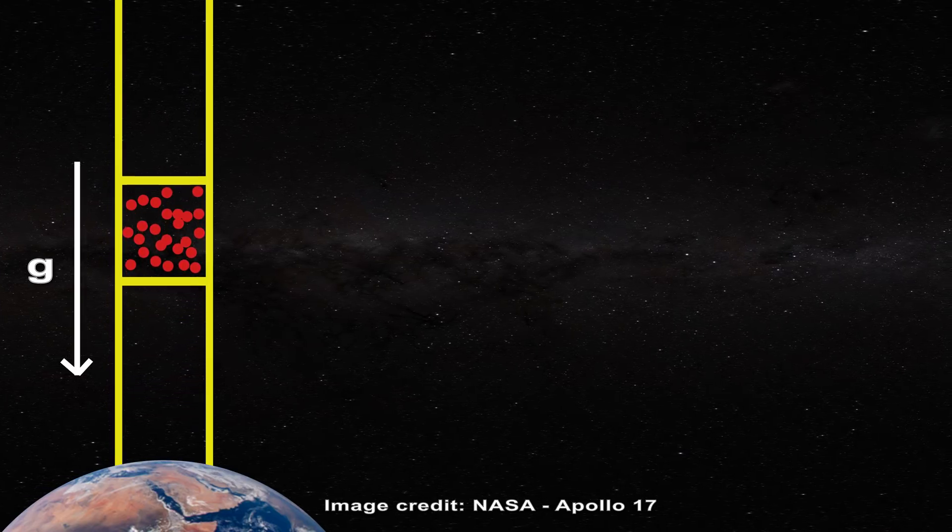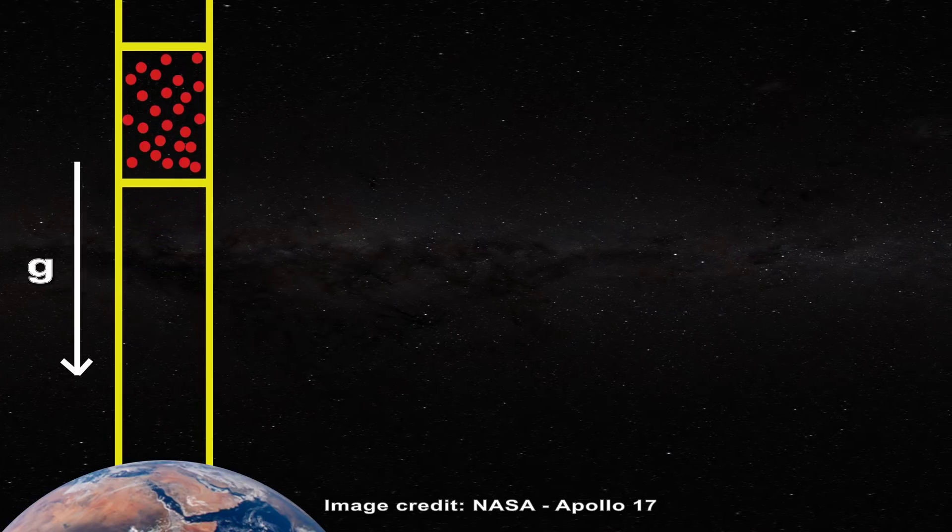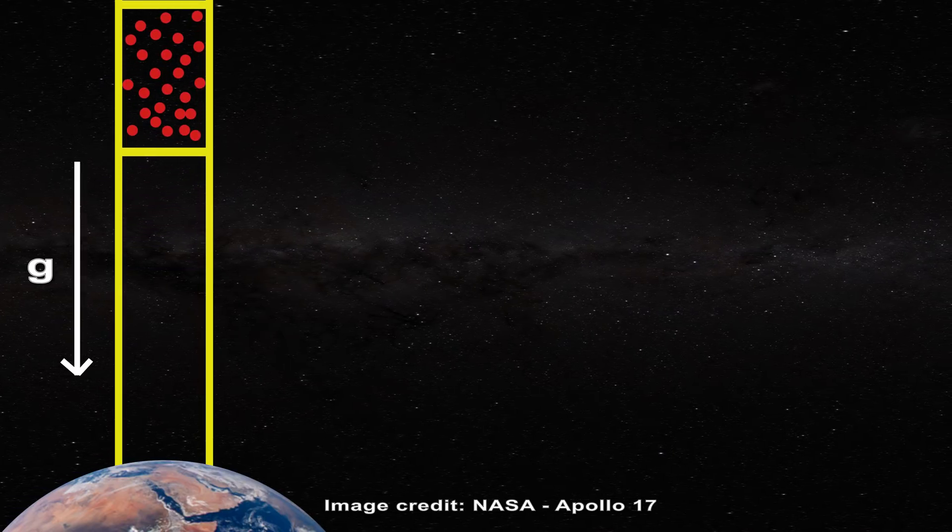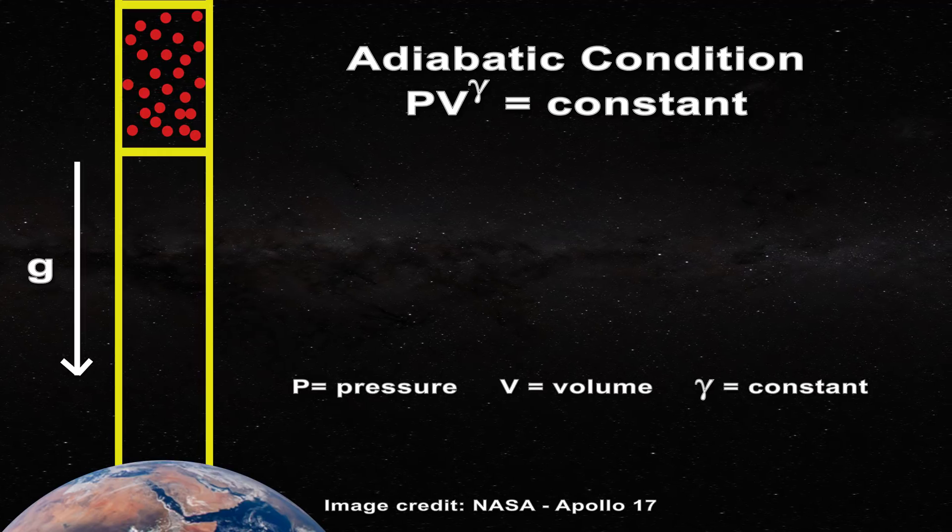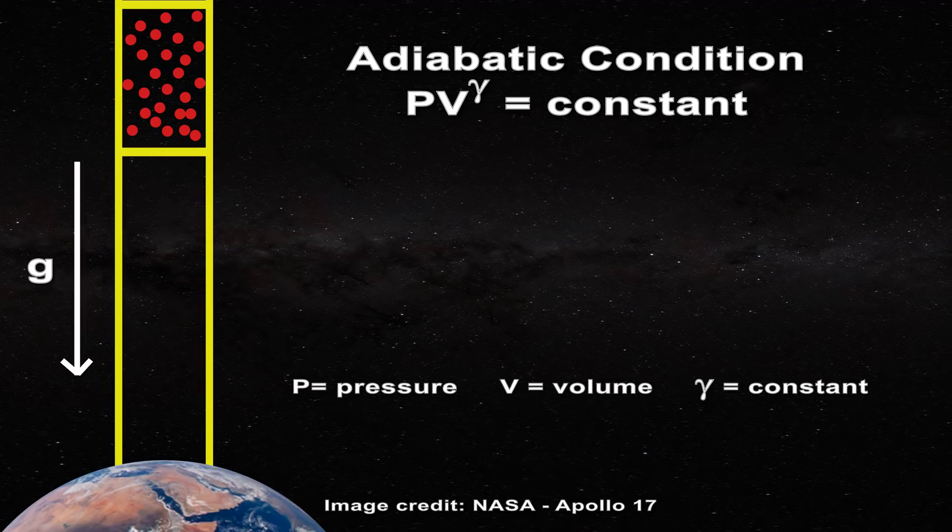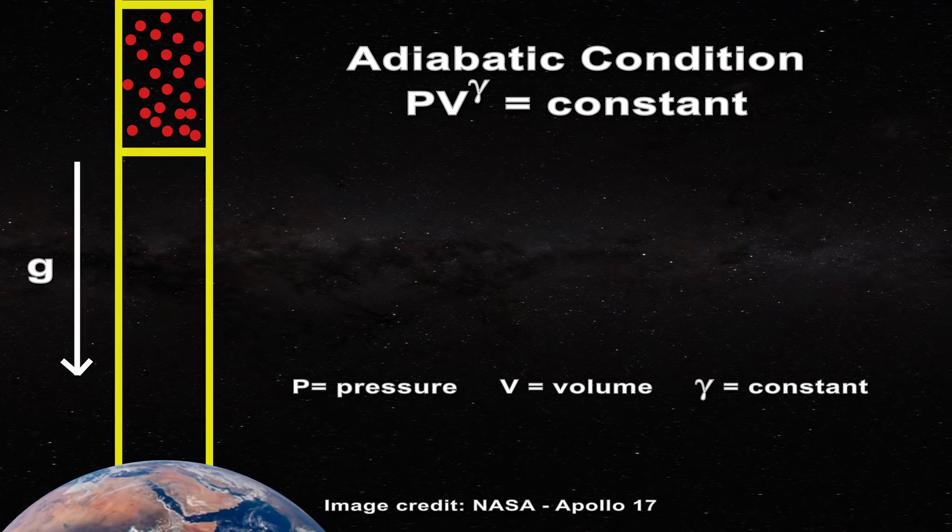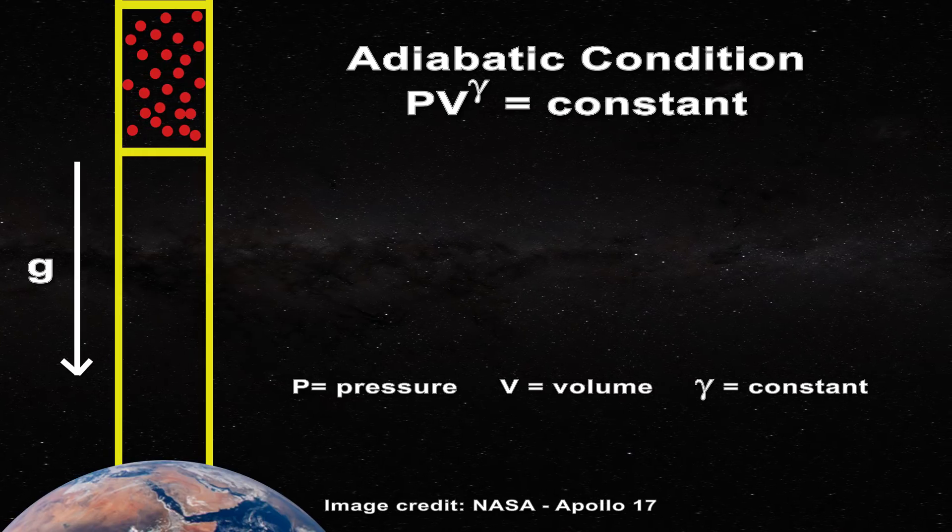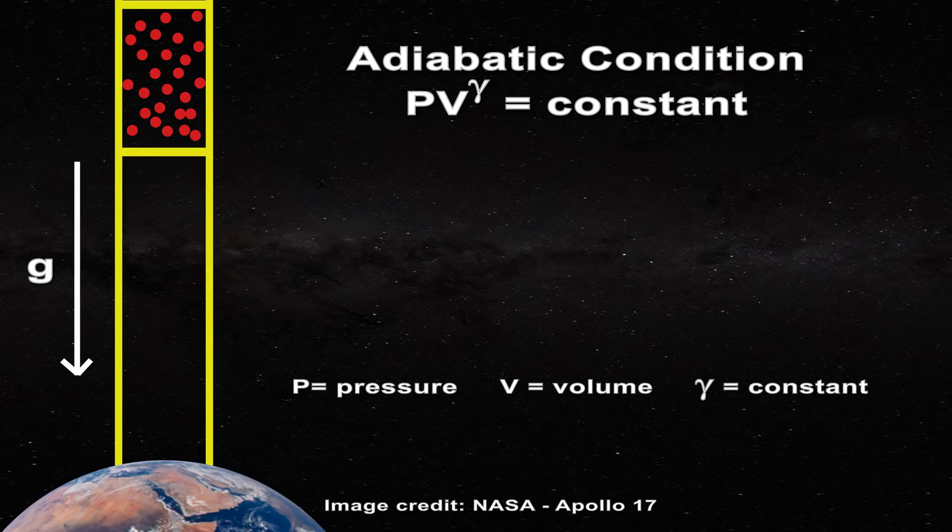During such a rise, the volume occupied by the mass of air would grow adiabatically, according to this expression, where p corresponds to pressure, v to volume, and gamma to a constant.